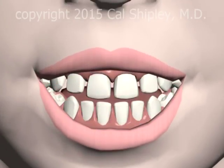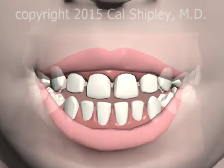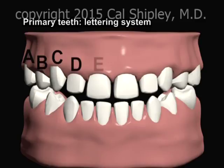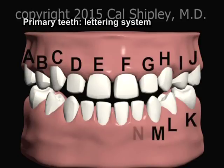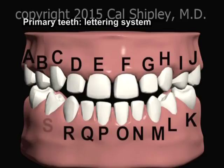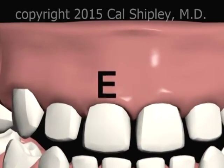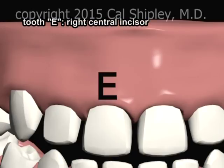The fully erupted primary teeth consist of 20 teeth total, 10 upper and 10 lower. The primary teeth are designated by a standard lettering system, as shown here. For the purposes of this presentation, I'm going to focus on tooth E, also known as the right upper central incisor.